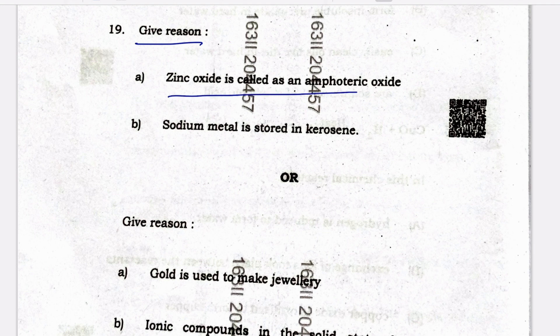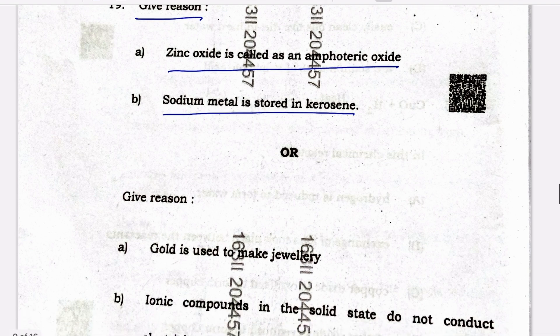Question 19 — give reason. Zinc oxide is also called an amphoteric oxide. It is because zinc oxide reacts with both acid and base to give salt and water. Next (b): sodium metal is stored in kerosene. It is because sodium readily reacts with water and air, so it is stored in kerosene.